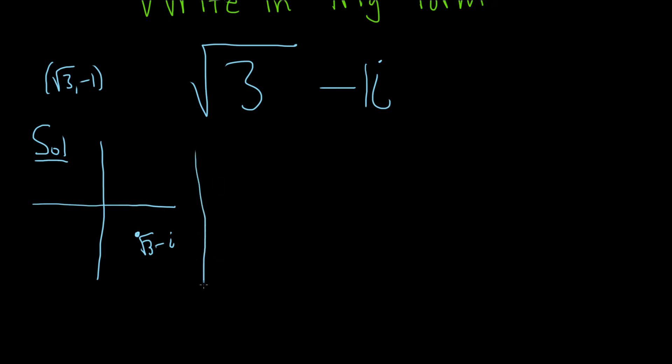The next step is to find r. So r is given by the square root of x squared plus y squared. So your x in this problem is the square root of 3, and your y is negative 1. So this is equal to the square root of the square root of 3 squared plus, and then y is negative 1. So negative 1 squared.